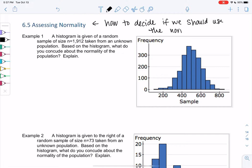Let's start off visually and then we'll do the more technical version after. Example 1: I have a histogram of a random sample of size 1912, so a nice big sample, taken from an unknown population. Based on the histogram what can you conclude about normality of the population? Explain.